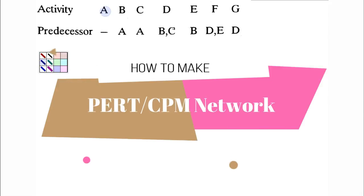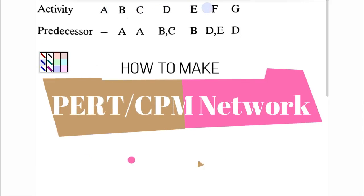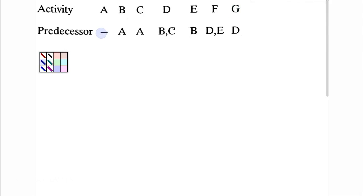Let us solve this problem where we will be making a network for the given predecessor relationship. We have activities A, B, C, D, E, F and G with these following predecessors.